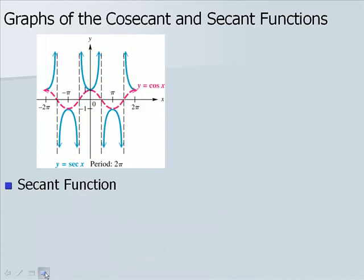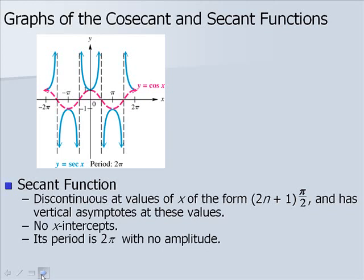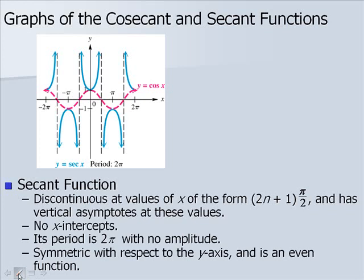Now the secant function: the guide function is cosine, graphed with vertical asymptotes in place and u-shaped branches drawn between them. The guide function dotted line would be erased on a final graph — the u-shaped branches are the actual graph of secant. The secant function is discontinuous at values of the form (2n+1)π/2 with vertical asymptotes at these values, occurring at the x-intercepts of the guide function. Secant has no x-intercepts, period 2π, no amplitude, and is symmetric with respect to the y-axis — an even function.